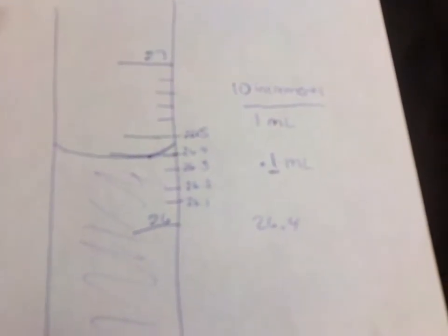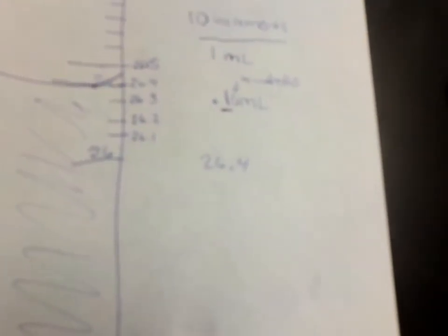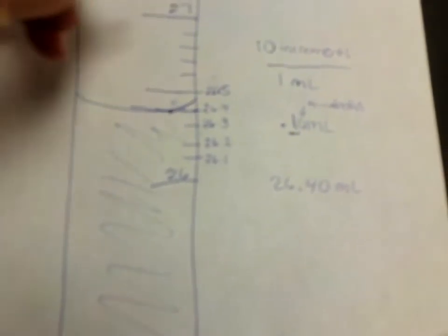So if I read to the, if my equipment reads to the tenths place, I need to guess to the hundredths place. So please make sure for all of your calculations, all of my burettes will read to the hundredths place. So because this is on the line for 26.4, I would put it as 26.40 ml.